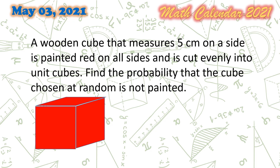Again, a wooden cube that measures 5 centimeters on a side is painted red on all sides and is cut evenly into unit cubes. Find the probability that the cube chosen at random is not painted.